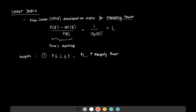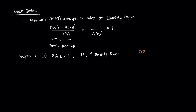I want to zero in on the term here: PQ minus MCQ, all over PQ. If a firm has control over price and has a lot of monopoly power, it can increase the price such that the difference between PQ and MCQ is increasingly positive. The higher that difference is, the higher the value of the entire index, and the closer it is to 1.